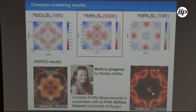Compton data allows reconstruction of the electron momentum distribution — it is a truly bulk-sensitive technique. We could nicely and easily see this large donut Fermi surface, in good agreement with the ARPES results. We then turned to terbium rhodium disilicide and performed measurements at room temperature, 300 K, which the excellent environment of the machine allowed us to do.